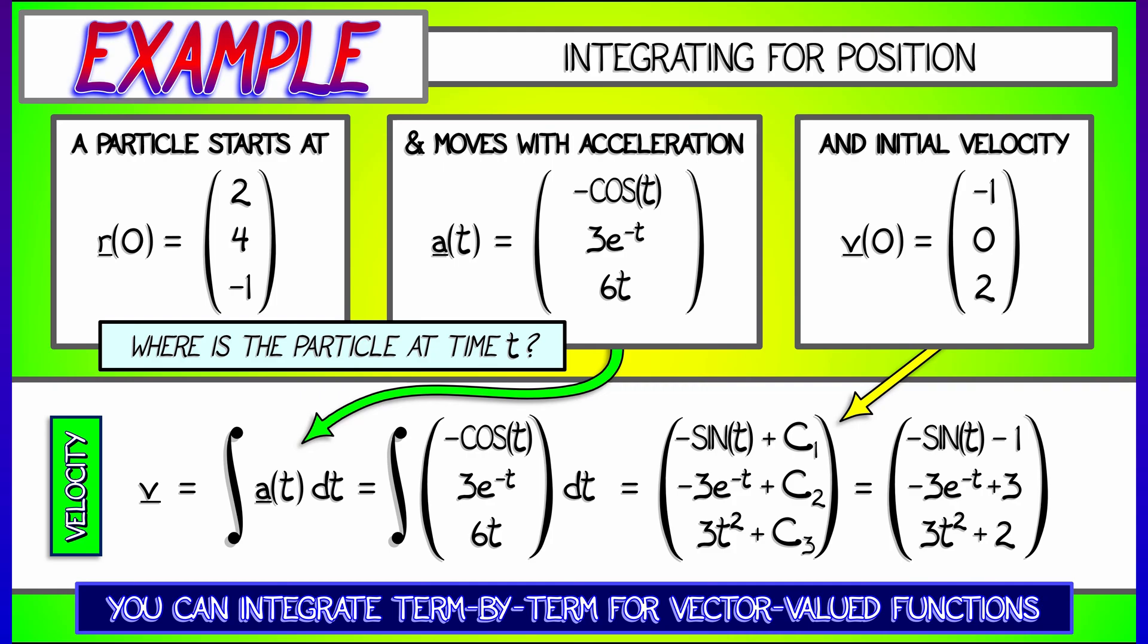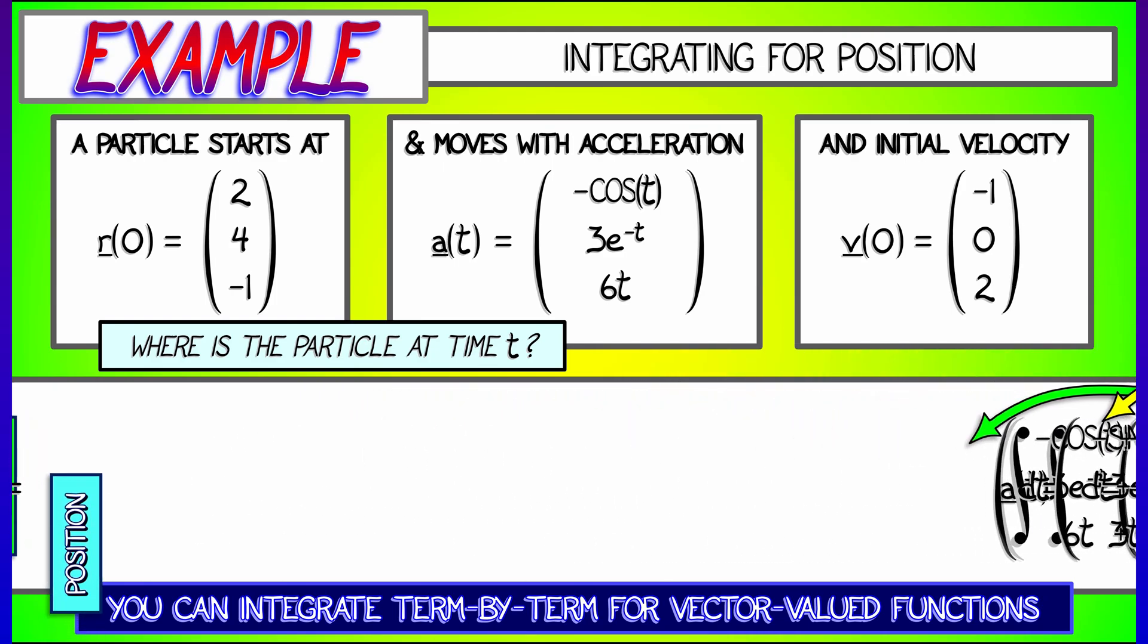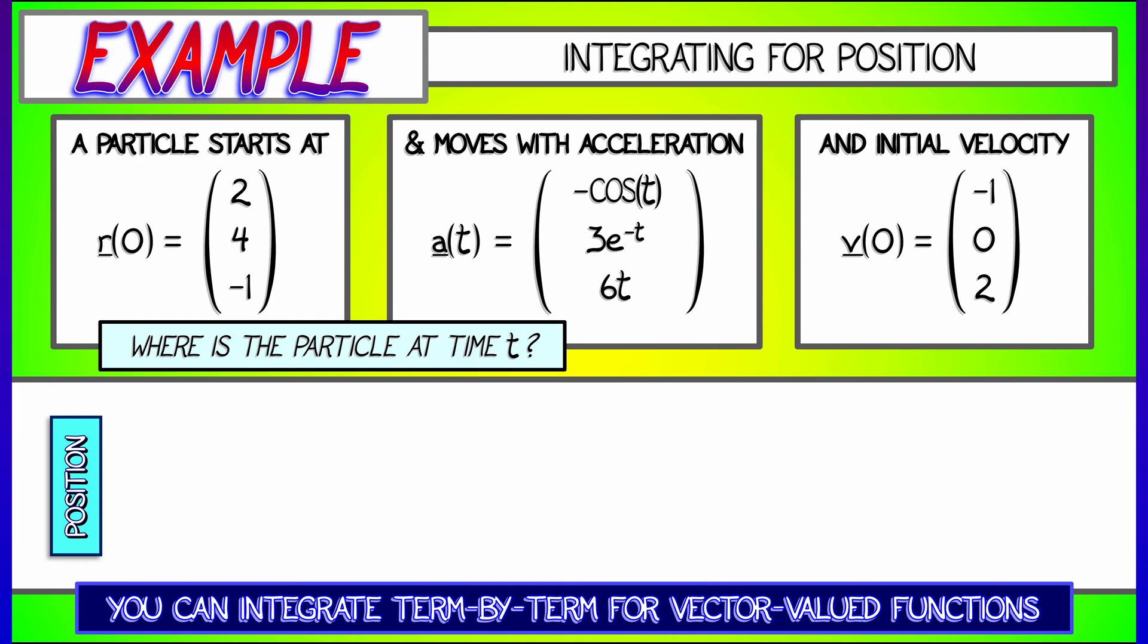Now, we're only halfway done because we need to get the position vector r as a function of t. But you already know what to do to get the position. We integrate the velocity vector v of t with respect to t. Plugging in what we just obtained for that velocity vector, including those constants, and integrating term by term, what do we get?